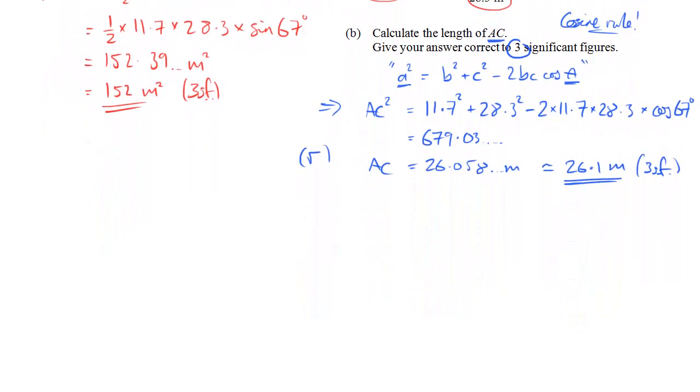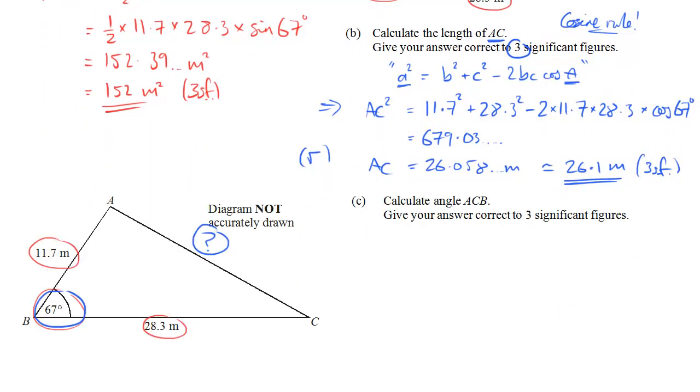Right, let's give ourselves a bit more space, and we'll have a look at part C. I've reproduced the triangle here. So we want to find the angle ACB and give it to 3 sig figs. So there we are. I'll call it X.